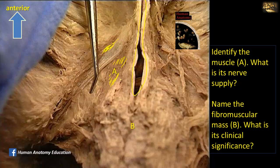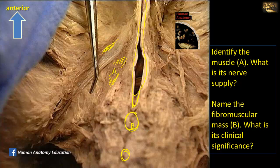Name the fibromuscular mass B. What is its clinical significance? This fibromuscular mass is located posterior to the vestibule, posterior to the fourchette where the two labia minora meet, and anterior to the anus. This is called the perineal body. It is a fibromuscular mass that serves as an anchorage point for muscles of the pelvis and perineum. It provides attachment for the levator ani, superficial and deep transverse perineal muscles, bulbospongiosus, and part of the external anal sphincter. This mass is very important for maintaining the positions of the pelvic viscera and for their continence — continence of feces and urine.